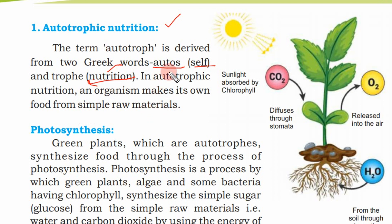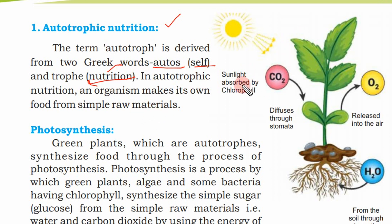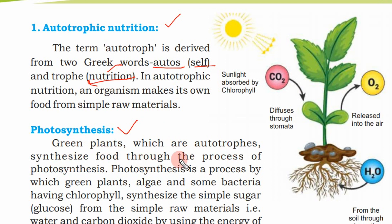In autotrophic nutrition, simple raw materials are used for self-nutrition. Now, talking about this, we will see green plants, which are autotrophs, synthesize food through the process of photosynthesis.